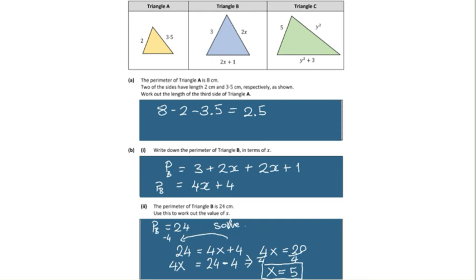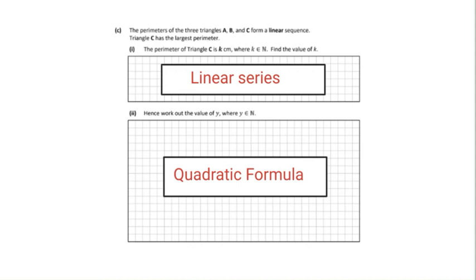Alright so let's go on to the second section in question 4. In part C we're given some information that the progression of the perimeters in a series is linear. So that means if we have the first and the second we can then add the same difference on to the second value to get the third.